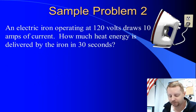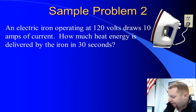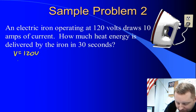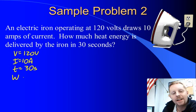Let's check out another one. An electric iron operating at 120 volts draws 10 amps of current. How much heat energy is delivered by the iron in 30 seconds? Well, now we're going to realize that we have a potential difference of 120 volts. Our current is 10 amps and this is going to occur in a time of 30 seconds. We're looking for heat energy delivered. So that's going to be energy, in this case capital W, the electrical energy.